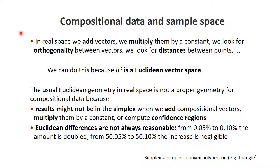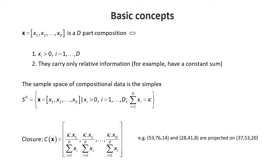Another issue is that differences are not always reasonable. For example, a difference between 0.1 and 0.05 is the same as the difference between 50.05 and 50.1 in absolute terms, but the first is a doubling of the amount while the second is a small increase possibly within sampling error. Let's put basic concepts into notation. A composition consists of various parts, part 1 through part D, and is a vector. Each xi within the composition is positive—zeros must be treated separately, as they lead to specific problems.